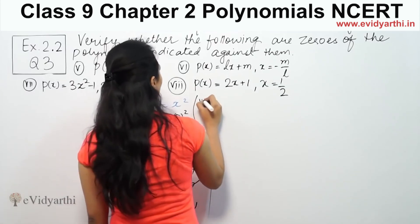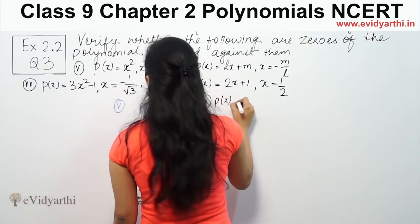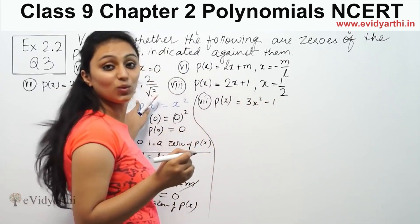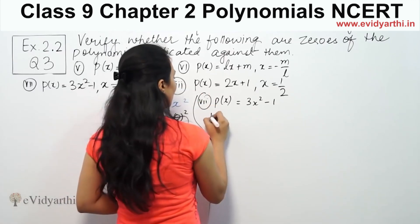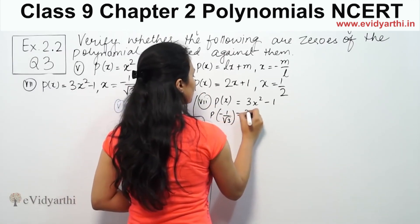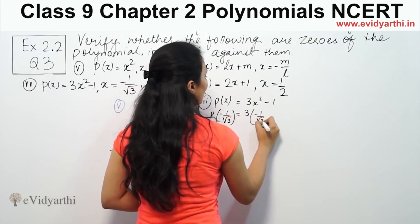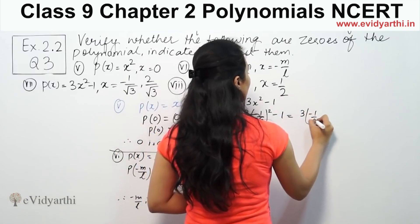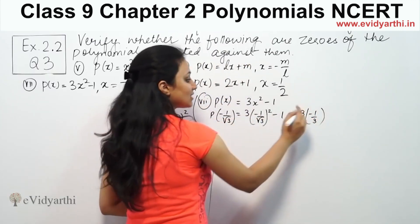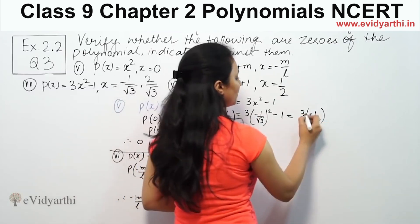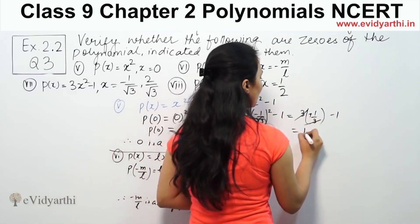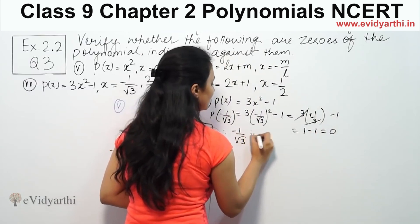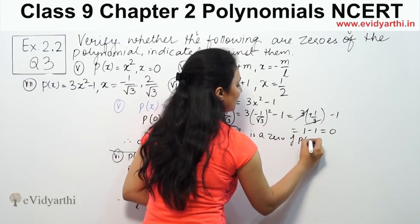Now check part number 7. We have p(x) equal to 3x squared minus 1, and we check two values. First, x equals minus 1 by root 3. If we put x equal to minus 1 by root 3, we get 3 times minus 1 by root 3 squared minus 1. Squaring gives a positive value, so we get 1 minus 1 equals 0. Therefore, minus 1 by root 3 is a zero of p(x).